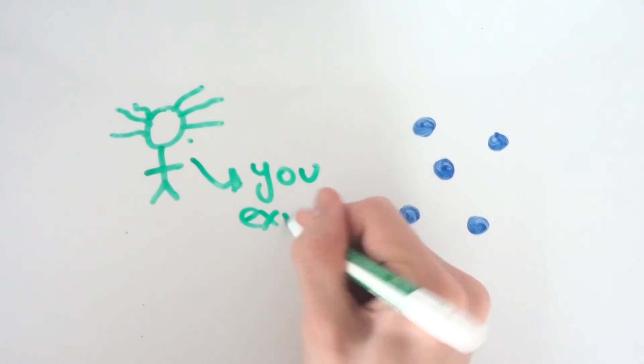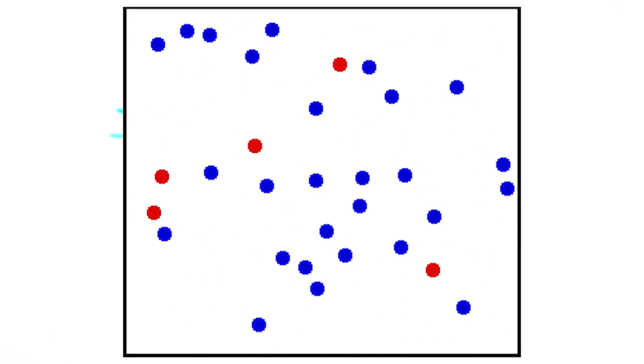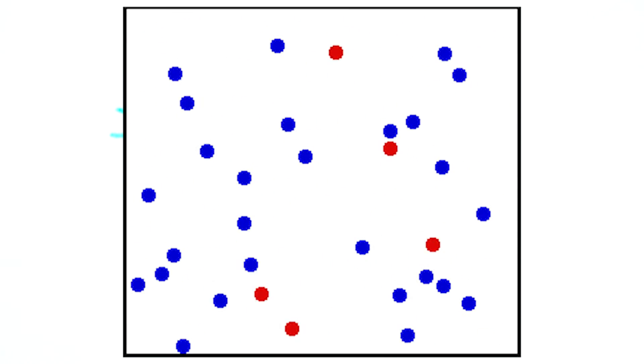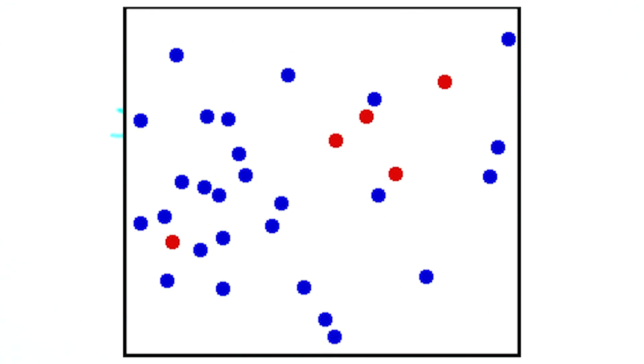Einstein also helped contribute to proving that atoms and molecules actually exist. In 1905 Einstein published a paper explaining the Brownian motion, which sees particles colliding with other molecules in a liquid or gas, causing them to move around in a random motion, which you can see now on your screen if you watch the red dots.